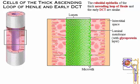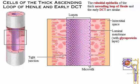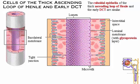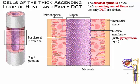The basolateral membrane is similar to that of the PCT, containing many integral proteins and closely associated mitochondria for passive and active membrane transport. The key feature of these cells is that they are highly permeable to solutes, particularly sodium chloride, but not to water.